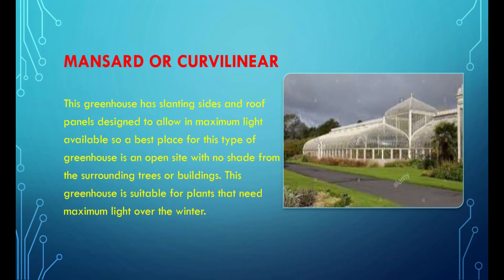The Mansard or Kervilineer greenhouse has slanting sides and roof panels designed to allow in maximum light. The best place for this type is an open site with no shade from surrounding trees or buildings. It is suitable for plants that need maximum light over the winter.